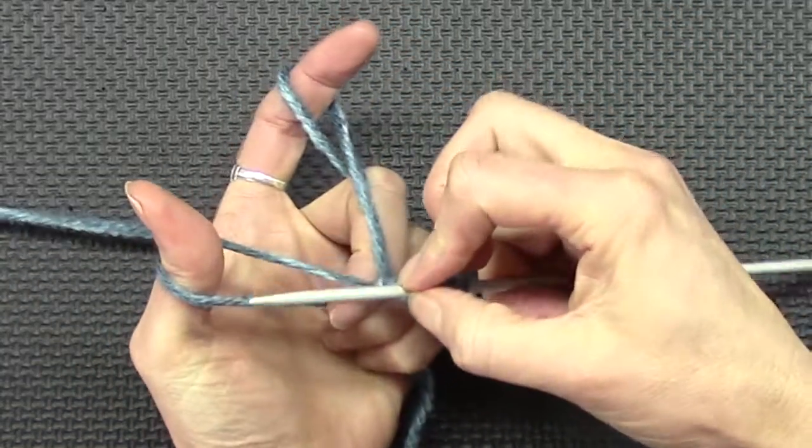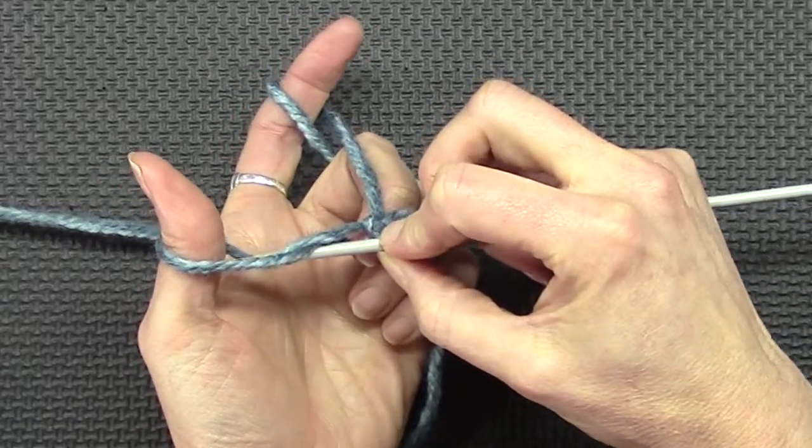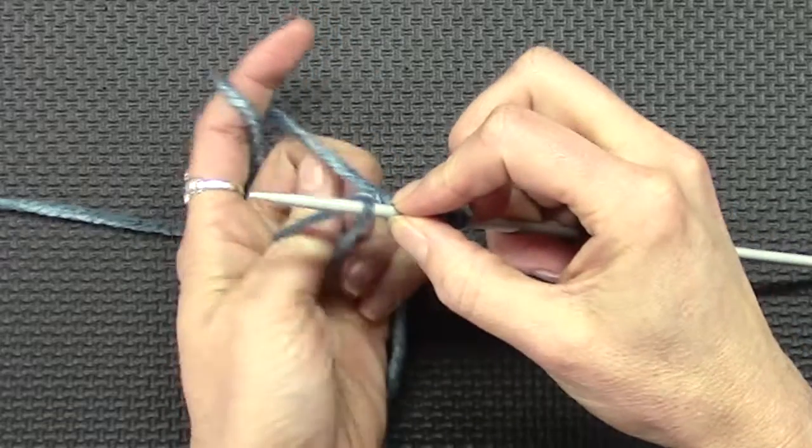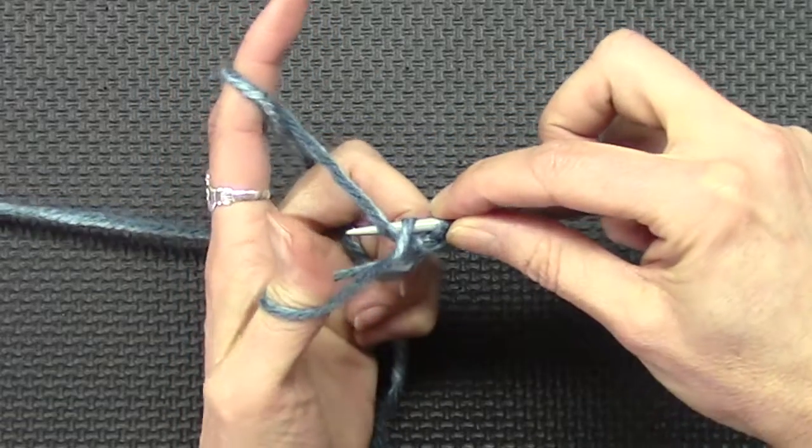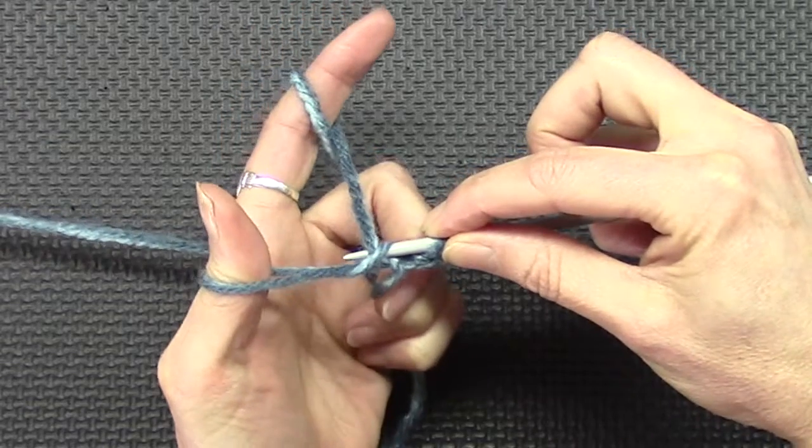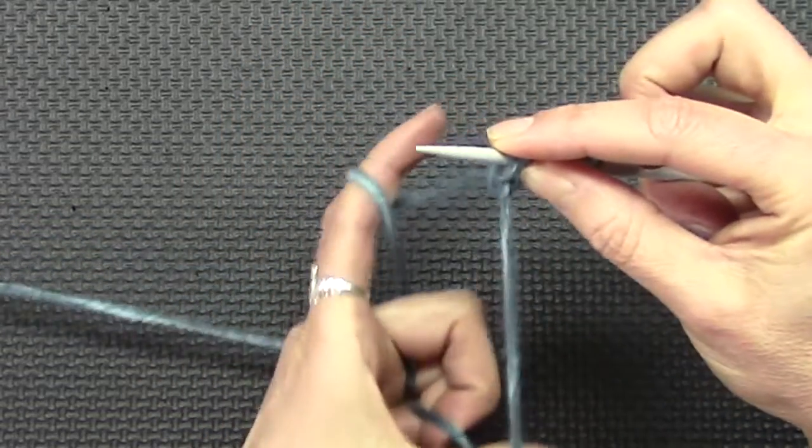Let's do it again. Around, into the hole in the thumb. Around the upper yarn and pull it through that little space you made. I don't know what to call that. And pull it down.